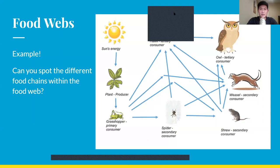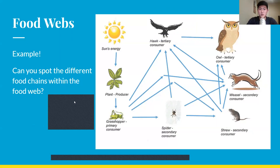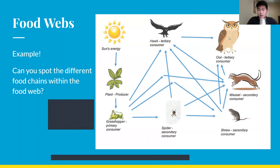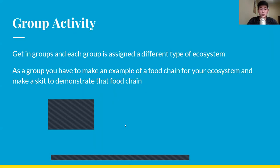Here's an example. Can you spot the different food chains within the food web? I can see one food chain that goes from the sun, to the plant, to the grasshopper, to the hawk, and then to the owl. Another food chain goes: plants, to the grasshopper, to the spider, to the shrew, to the weasel, to the owl. As you can see, there's a bunch of different food chains in this food web.